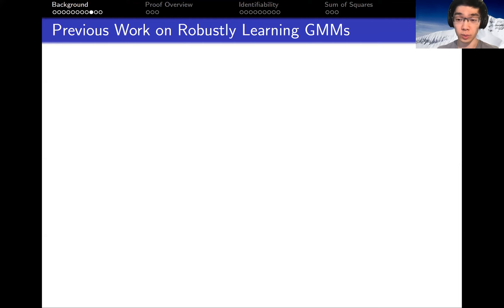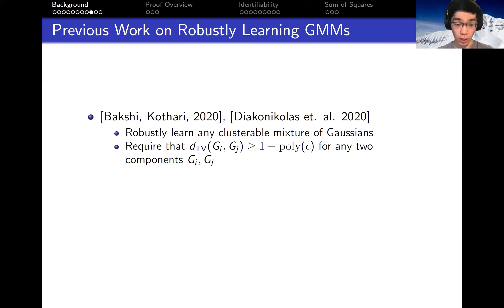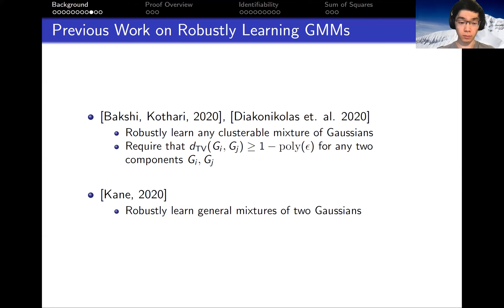Regarding robustly learning Gaussian mixture models: the first very relevant works, from 2020, address robustly learning any clusterable mixture of Gaussians, meaning that basically any two components are very separated, so it is essentially possible to label each point by which component it came from. Next, there was work by Kane in 2020 giving an algorithm for learning a general mixture of two Gaussians, even if the two Gaussians overlap.